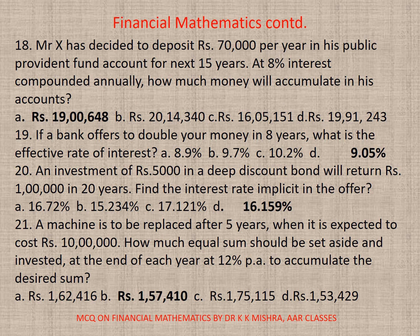Question 18: Mr. X has decided to deposit rupees 70,000 per year in his public provident fund account for the next 15 years at 8% interest compounded annually. How much money will accumulate in his account? The correct option is A — rupees 19,48,649.